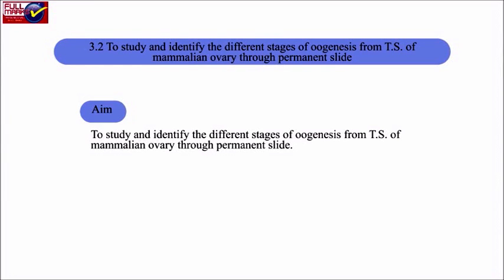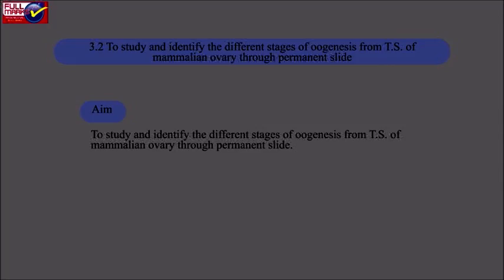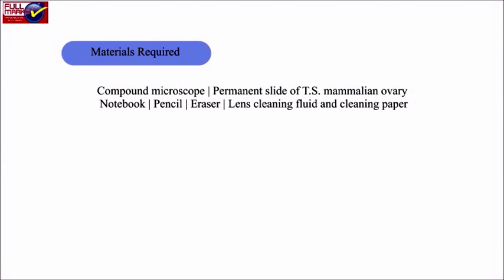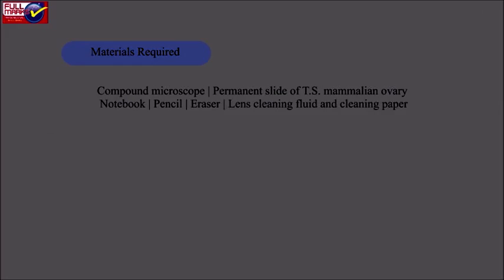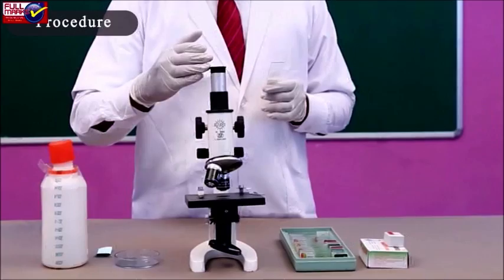Experiment 3.2 — aim: to study and identify the different stages of oogenesis from the transverse section (TS) of mammalian ovary through a permanent slide. Materials required: compound microscope, permanent slide of TS of mammalian ovary, notebook, pencil, eraser, lens cleaning fluid, and cleaning paper.